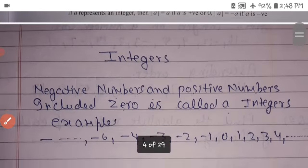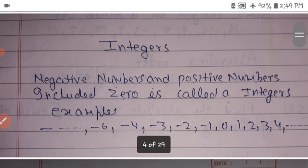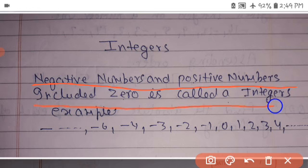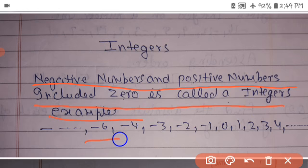To recap: the combination of negative numbers, positive numbers, and zero is called an integer. For example: minus 6, minus 5, minus 4, minus 3, minus 2, minus 1, 0, 1, 2, 3, 4.